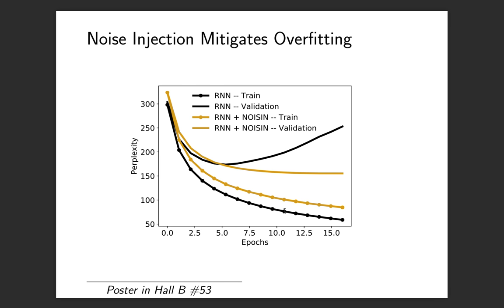We did that for a language modeling task on the benchmark dataset Penn Treebank. What we report here is the perplexity across iterations of the deterministic RNN and the RNN regularized with noise. The performance of the deterministic RNN is shown in the black curves and the performance of the noise injected RNN is shown in the yellow curves.